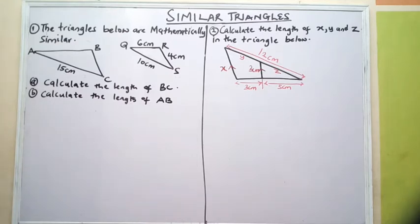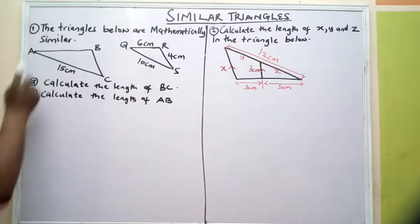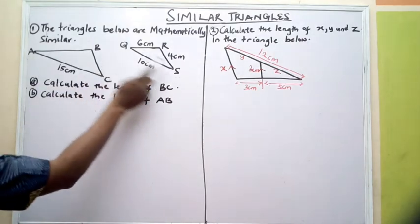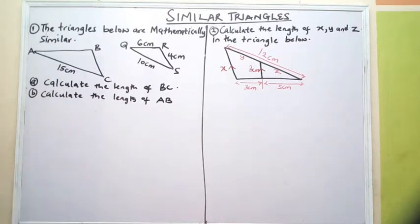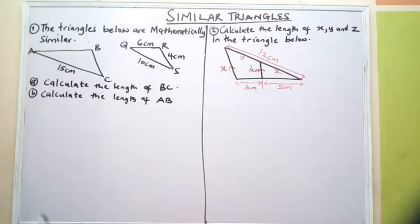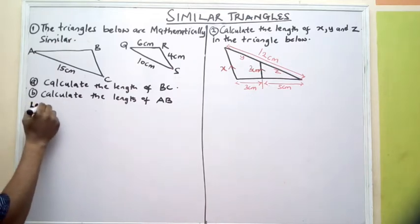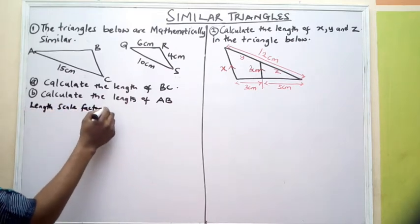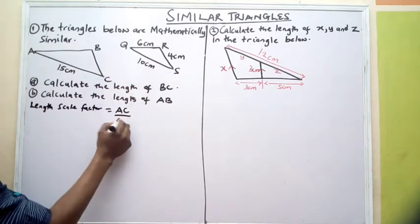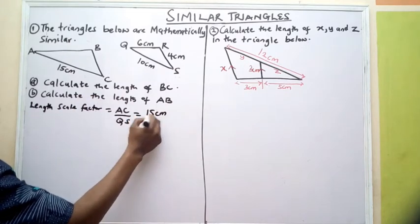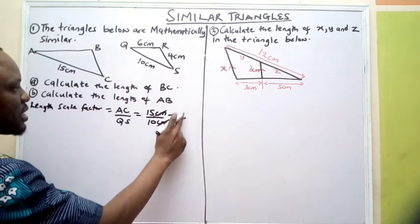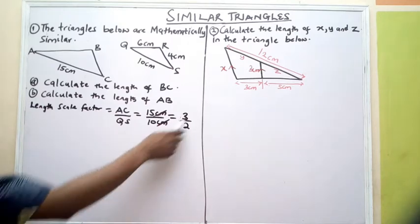How do I get my length scale factor? My length scale factor simply means you look at the corresponding sides. AB and QR are corresponding sides. BC and RS are corresponding sides. AC and QS are corresponding sides. AC is giving us 15 and QS is giving us 10. Therefore, the length scale factor — we can call it LSF — is the larger corresponding side AC divided by the smaller corresponding side QS: 15 cm divided by 10 cm. If I reduce this, I get 3 over 2. Therefore, my scale factor has no unit.